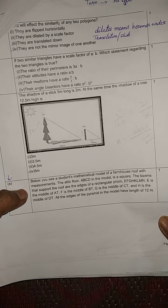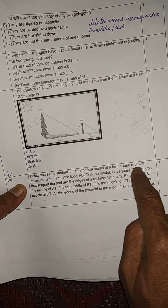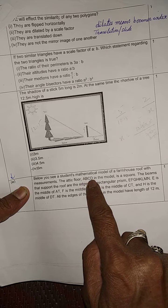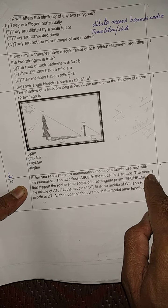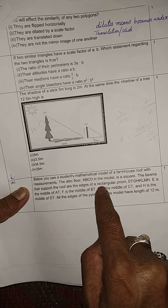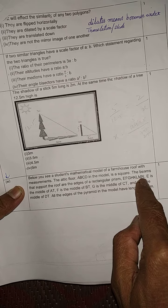Below you see a student's mathematical model of a farmhouse roof with measurements. The attic floor ABCD in the model is square. The beams that support the roof are the edges of a rectangular prism EFGHKLMN.